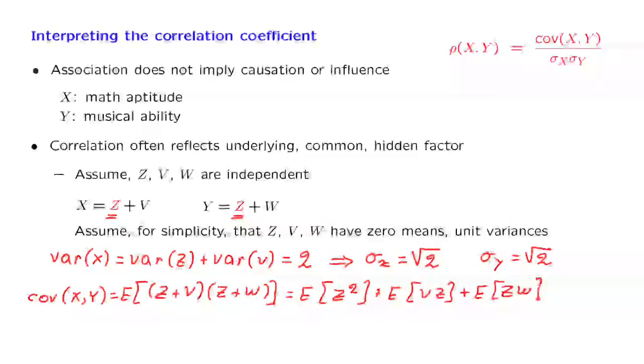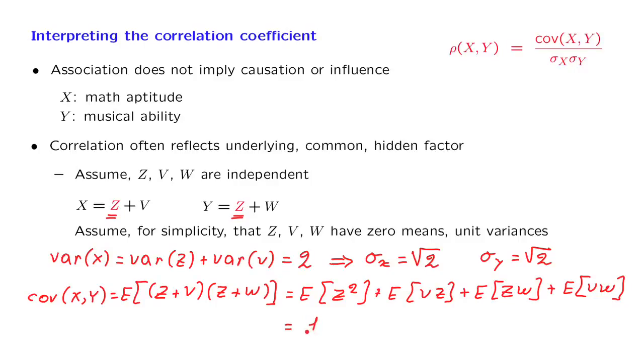Which leaves us with this particular expression here. Now, z has zero mean and unit variance. Therefore, the expected value of z squared is equal to 1. How about the next term? v and z are independent. So the expected value of the product is the product of the expected values. But the expected values are 0. So this term is 0. And with a similar argument, the other terms are 0 as well.